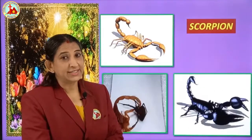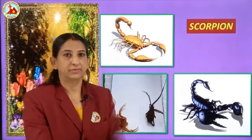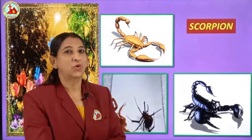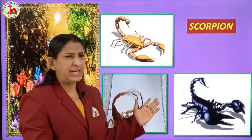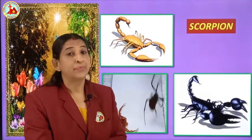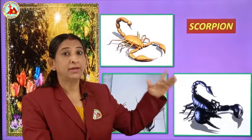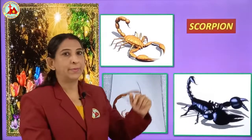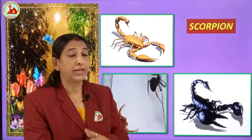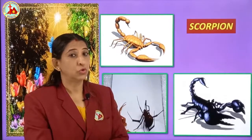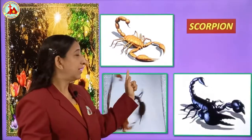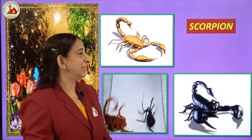Next is scorpion. Which insect is this? Scorpion. They bite very hard and they are very poisonous. Near the beaches we can find them. Very poisonous insect — so stay away from them.